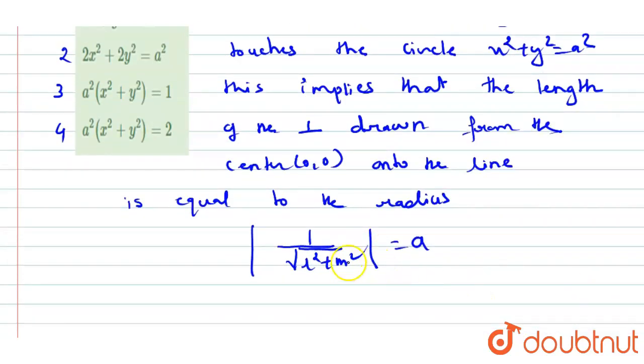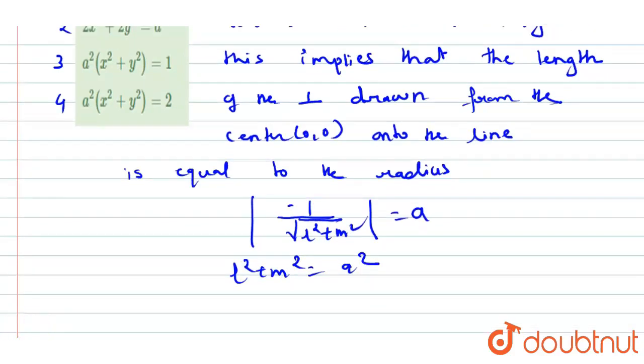When we solve this, we get l² + m² = a². So the equation of a circle is: